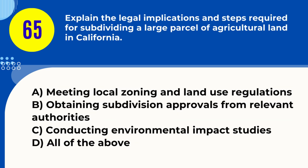Question 65. Explain the legal implications and steps required for subdividing a large parcel of agricultural land in California. A. Meeting local zoning and land use regulations B. Obtaining subdivision approvals from relevant authorities C. Conducting environmental impact studies D. All of the above. Answer: D. All of the above. Explanation: Subdividing agricultural land requires compliance with zoning regulations, obtaining necessary approvals, and environmental impact assessments.